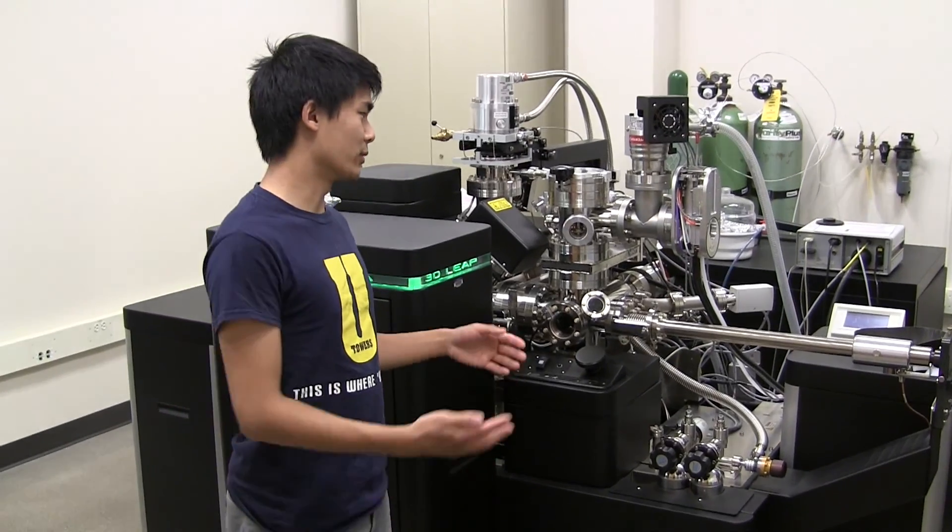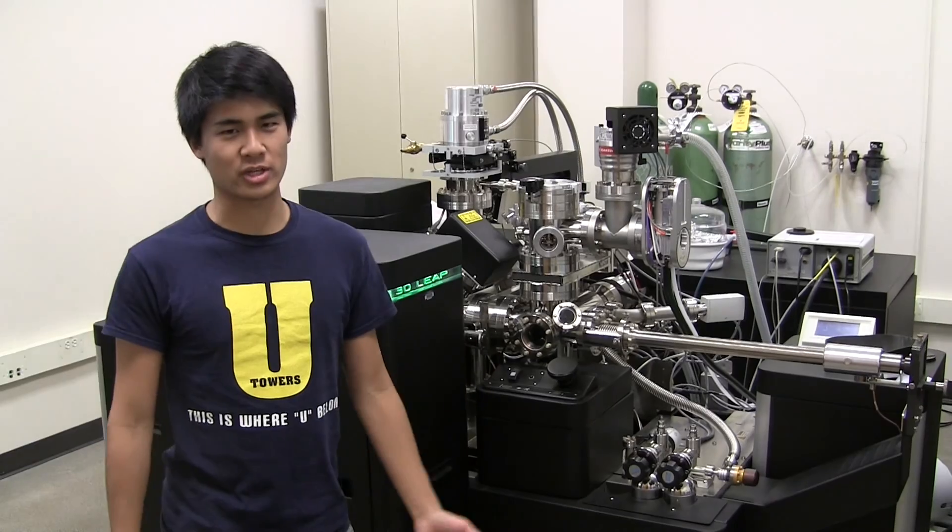All right. So we're in EMAL, stands for Electron Microbeam Analysis Laboratory. This is where you can find all the really fancy instruments that undergraduate students shouldn't be touching. Yeah. Here you're going to find the atom probe. Let's go check it out. All right. So we're at the atom probe. This is where the magic happens.